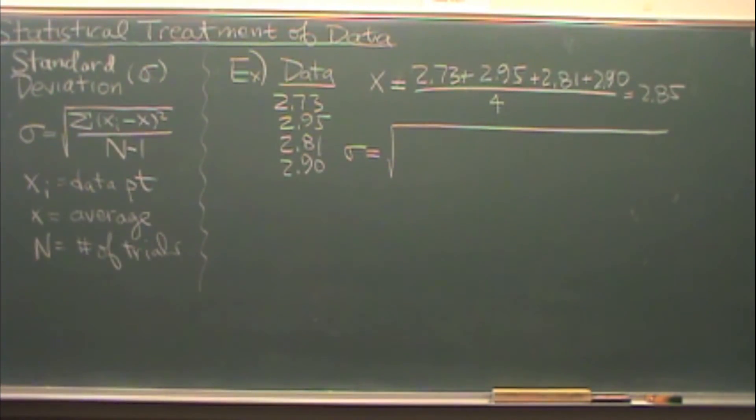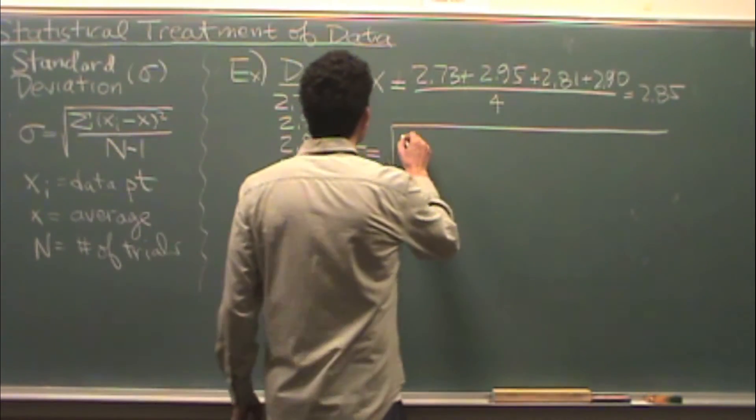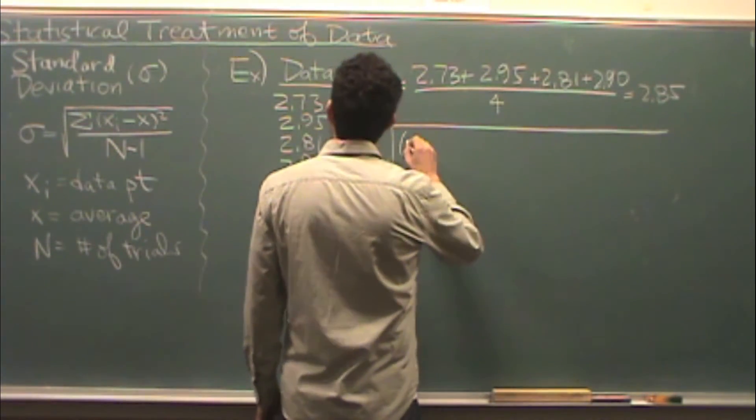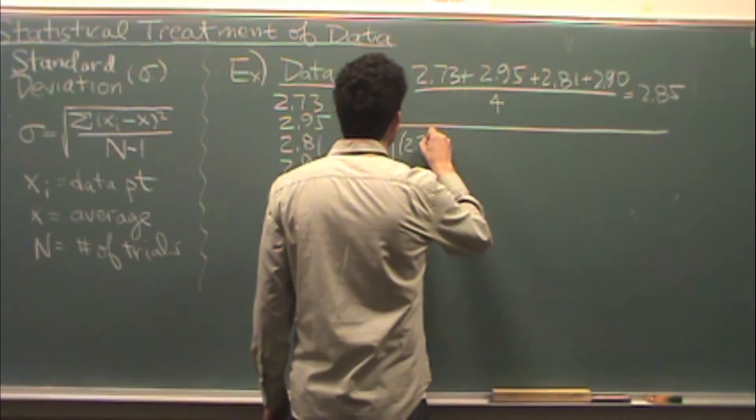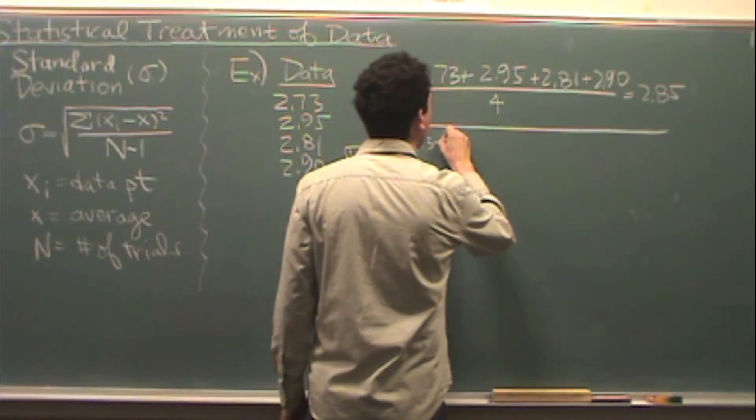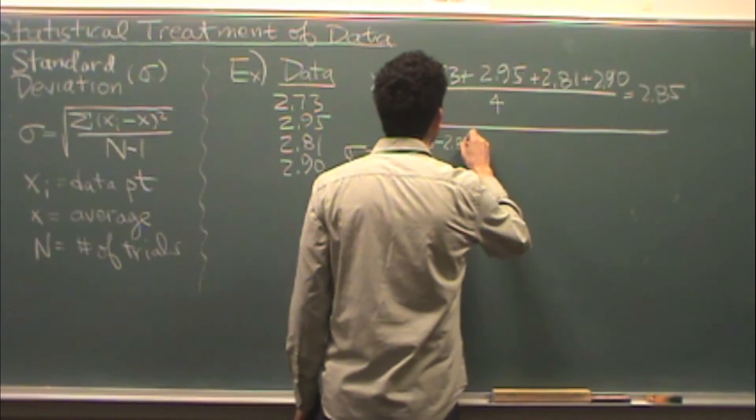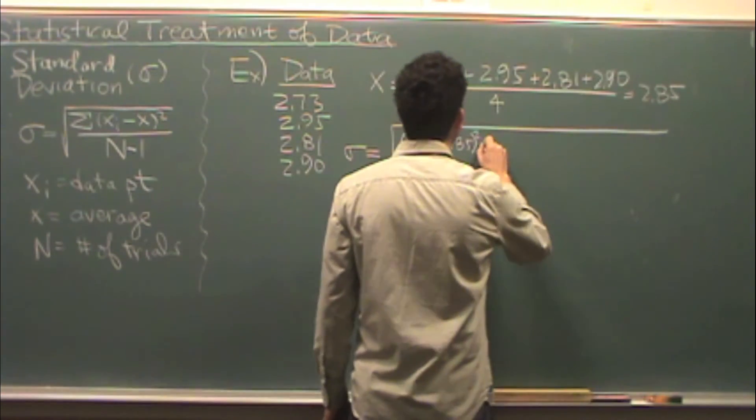Now, let's find the standard deviation. How would you do that? Well, you're going to take each data point, say 2.73, and you subtract it off from the average, 2.85. I'm going to square that,